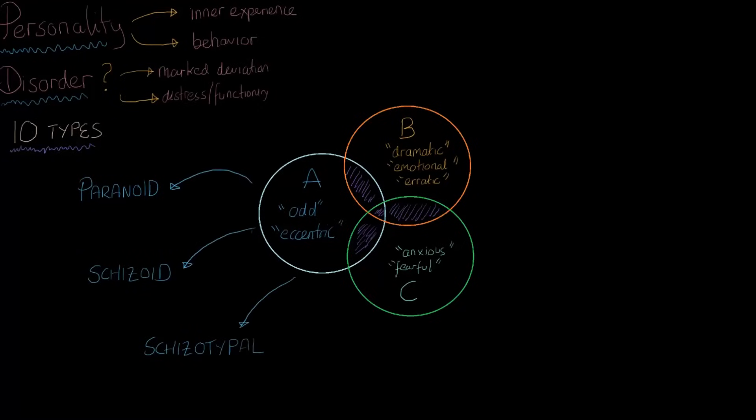Let's start off with paranoid personality disorder. The key feature that really causes impairment here is this really profound distrust and suspicion of other people, and that would be in keeping with the name, right? Paranoid.